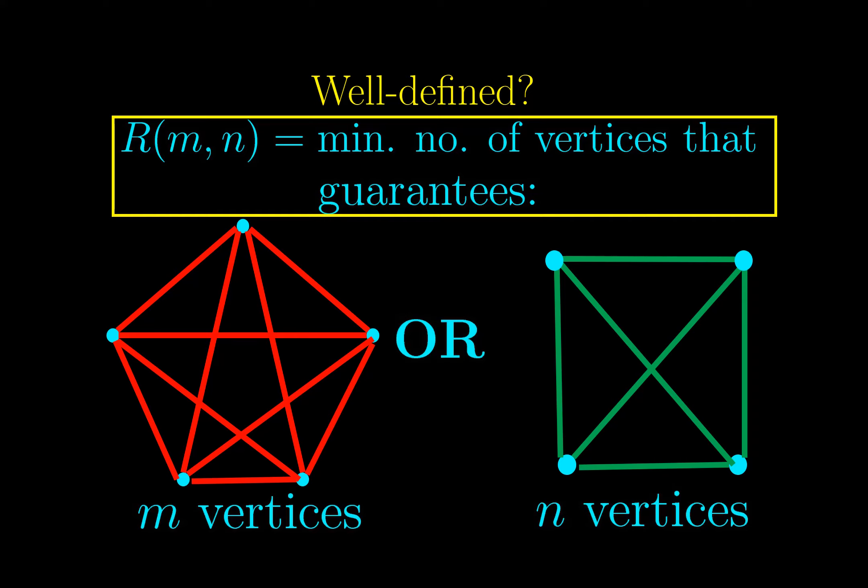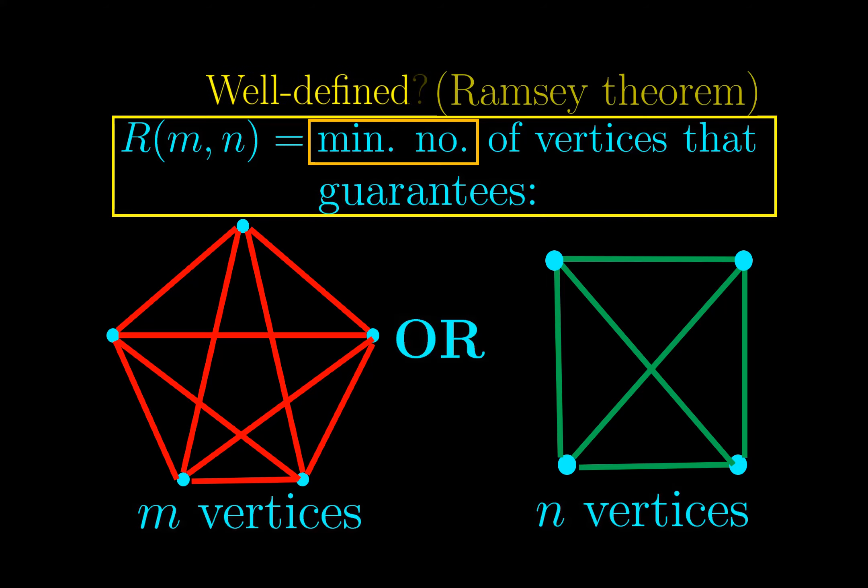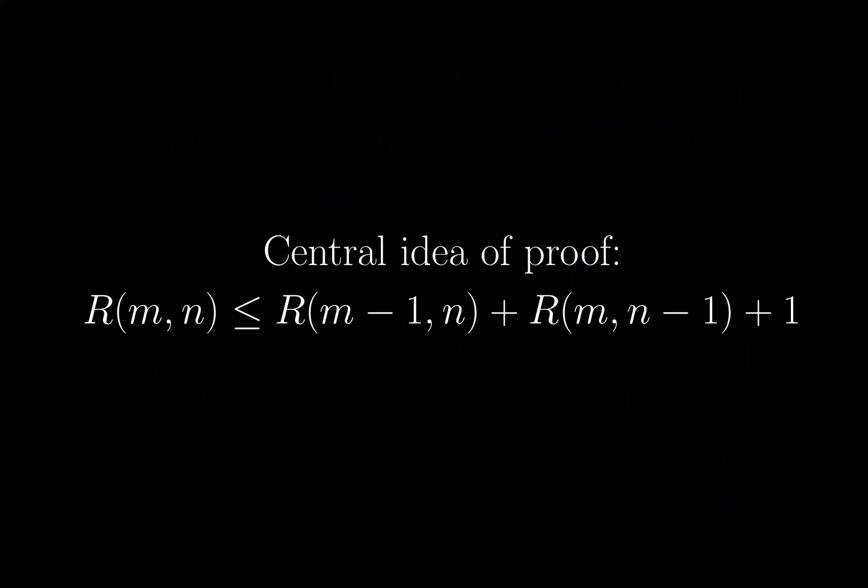The problematic bit is that we defined R(m,n) to be the minimum number of something. But it is possible that we can never guarantee any of the two things below, no matter how large the graph is. But it is indeed well defined, and this is a special case of Ramsey's theorem. It takes a theorem to justify the well-definedness of something. The proof of it is not difficult, and I will put it in a separate video. But we will use this central idea of the proof for the next section of this video.